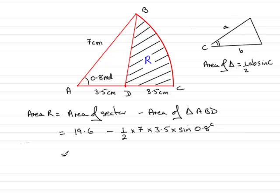So when we work this out, we've got 19.6 and you should find that the area of the triangle comes out to 8.78761 and so on.